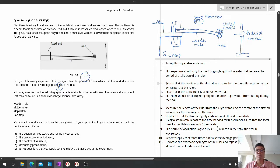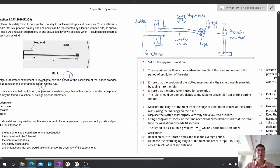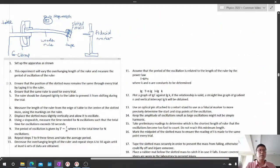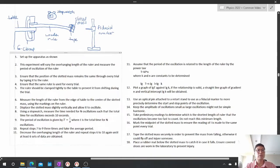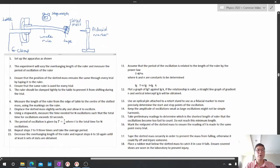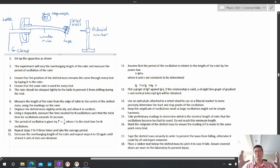Let us begin with the method. These are the control variables: Ensure the position of the slotted mass remains the same through every trial by taping it to the ruler. Ensure that the same ruler is used for every trial because we want to make the material of the ruler and the properties of the ruler stay the same. The ruler should be clamped tightly to the table to prevent it from shifting during the trial.